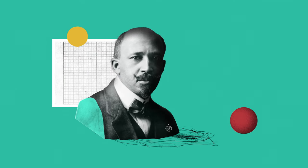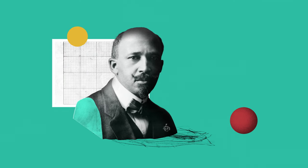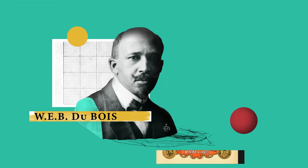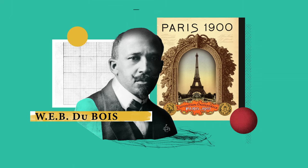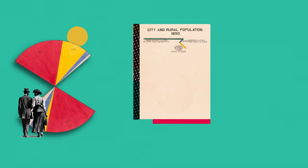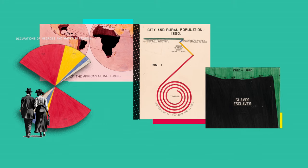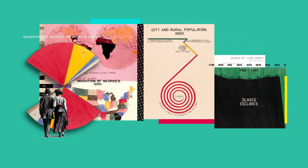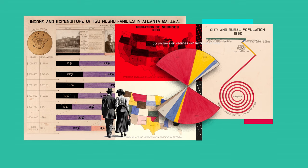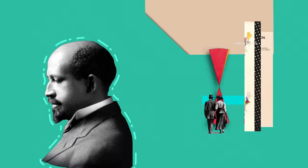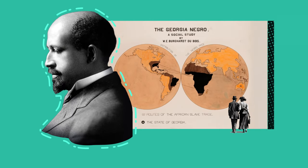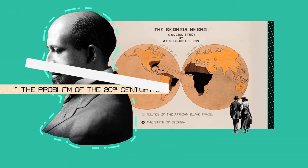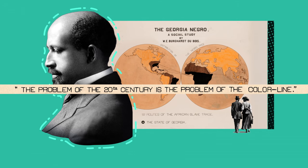One of the most original examples of data visualisation was created by American historian and civil rights activist W.E.B. Du Bois for the 1900 Paris World's Fair. He presented a series of handmade charts showcasing the educational, social and business accomplishments of black Americans in the 35 years since slavery had been officially abolished. The materials both challenged stereotypes and illustrated how black communities were still being discriminated against. Du Bois hoped the visualisations would help to end racial prejudice in the world. "The problem of the 20th century is the problem of the colour line," he wrote.